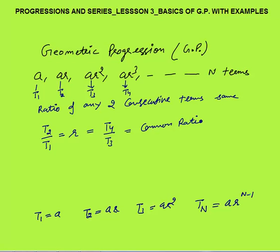You don't need to memorize this — you can apply your common sense. In the third term the power of R is 2, in the second term the power of R is 1, so in the nth term the power of R will be N minus 1. The power of R is always 1 less than the term number.